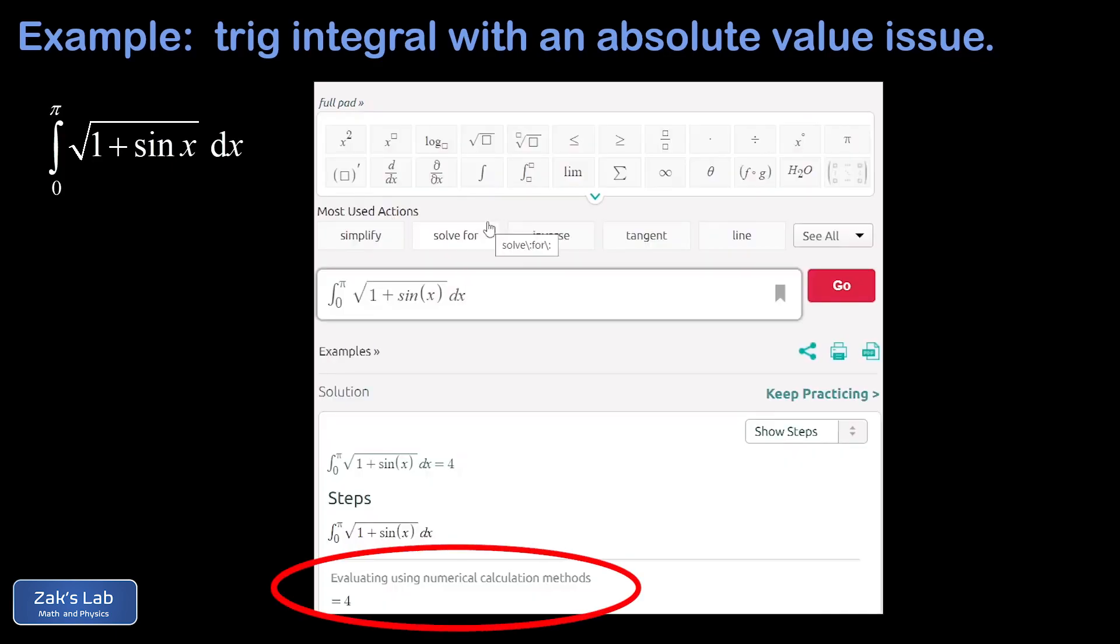As you can see, Simbolab has given up and it says it's just evaluating using a numerical calculation method. But there are actually two different ways of evaluating this integral symbolically and getting an exact answer of four.